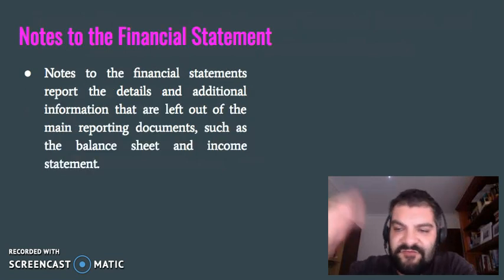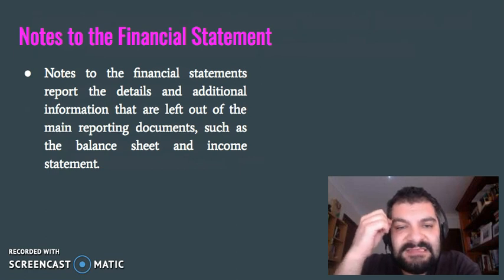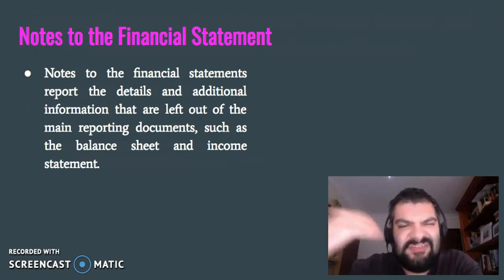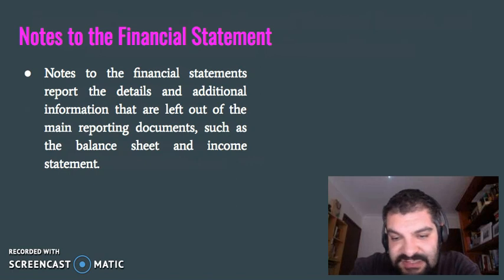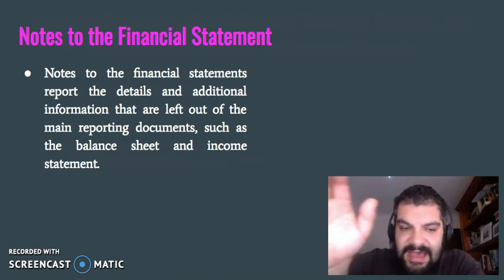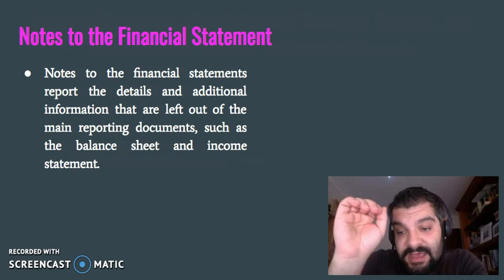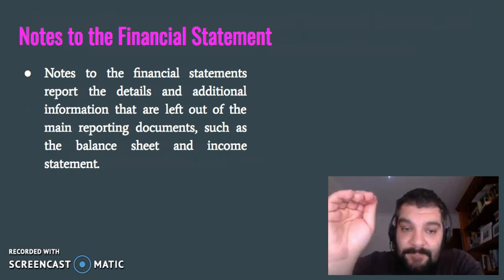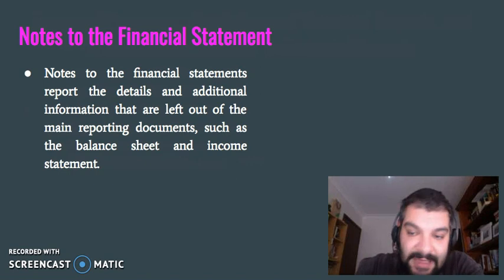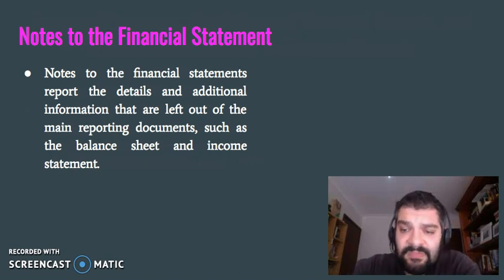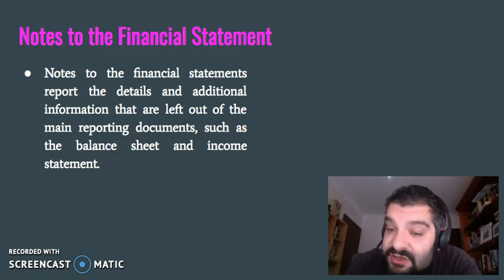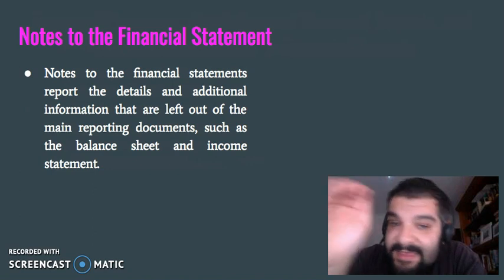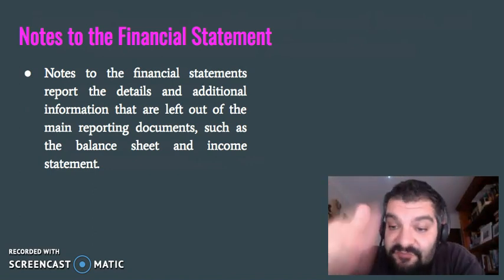Finally, there are also notes for a financial statement. These are details and additional information that is normally left out of the main reporting documents. They include important things such as the accounting methodologies used for recording and reporting transactions, which can really affect the bottom line for the company. You don't normally see these on a balance sheet or income statement, but they are included elsewhere, so you need to look for them to get a better picture of the financial statement.